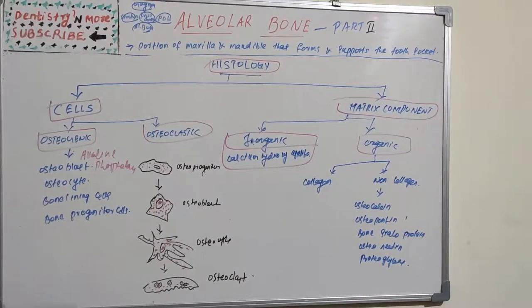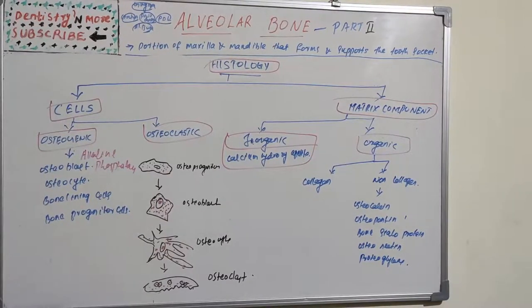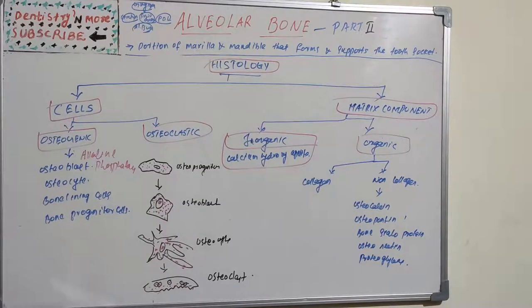Bone lining cells are present when bone surfaces are neither in the formative nor resorptive phase — the surface is completely lined by a layer of flattened cells known as bone lining cells, regarded as post-proliferative osteoblasts. Osteoprogenitor cells are fibroblast-like cells with an elongated nucleus and few organelles — they produce osteoblasts.